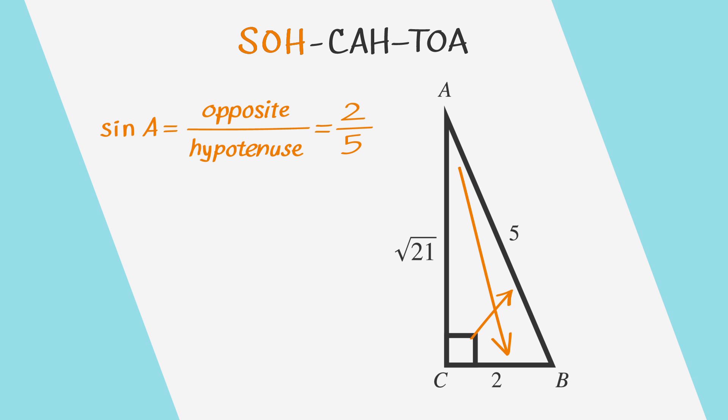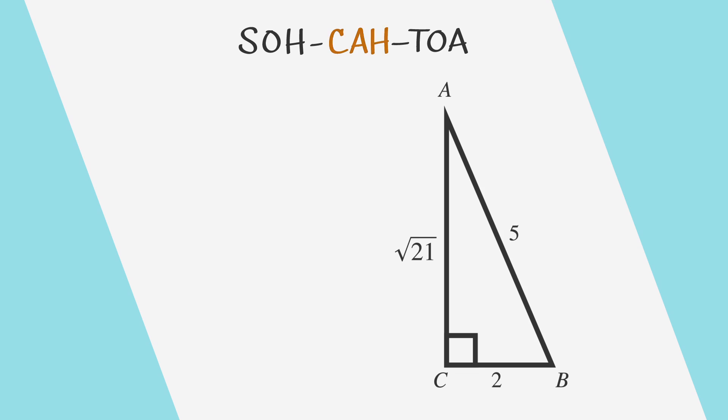We've figured out our sine. Now let's set up an equation for the cosine of A. Cosine of A is the side adjacent to angle A over the hypotenuse. The adjacent side is the square root of 21, and the hypotenuse is 5. So the cosine of A would be the square root of 21 over 5.